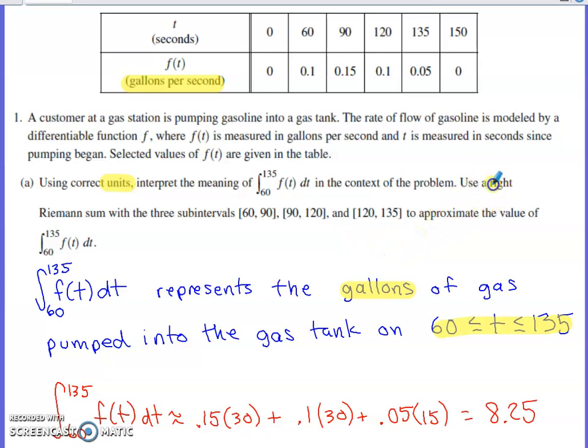And if we're asked to do a right Riemann sum, we would just have to come up and look at each interval. So on the interval 60 to 90, the right endpoint would be 90. We'd be using this for the height of the first rectangle. So its width is 30. Its height is 0.15.